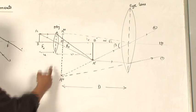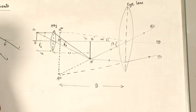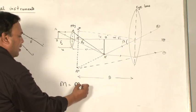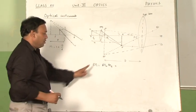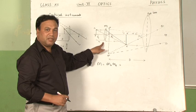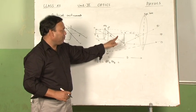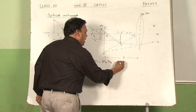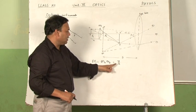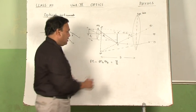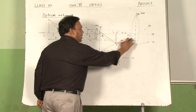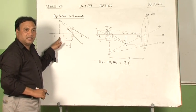The formula for magnifying power starts with m equal to ratio of beta to alpha. Since this instrument has two lenses, both lenses contribute to the magnifying power. The combined magnifying power is equal to the product of the individual lenses, so m equals m-o multiplied by m-e, where m-o is the magnifying power of the objective lens and m-e is the magnifying power of the eye lens. This equals v upon u, where v is the image distance for the objective lens and u is the object distance, multiplied by m-e.